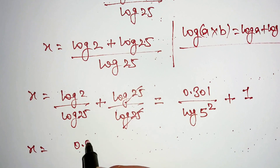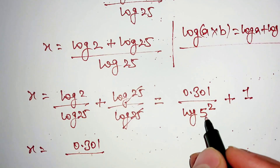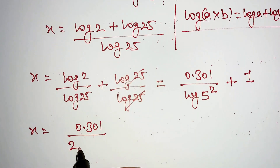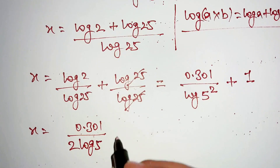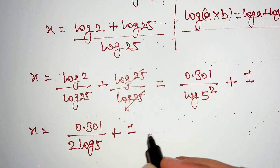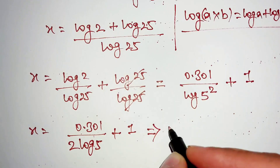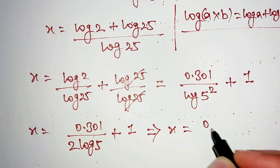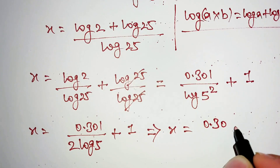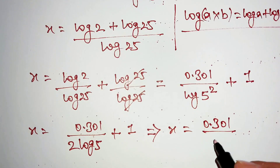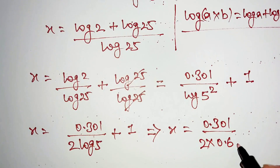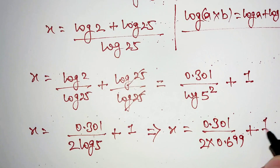Now log 5 squared can be written as 2 log 5, plus 1. This gives x equal to log 2, which is 0.301, divided by 2 log 5, where log 5 value is equal to 0.699, plus 1.